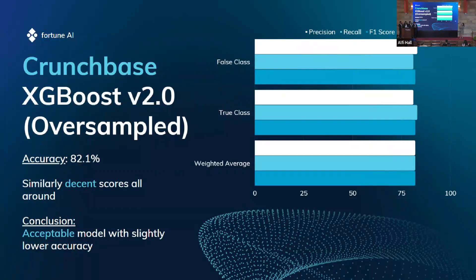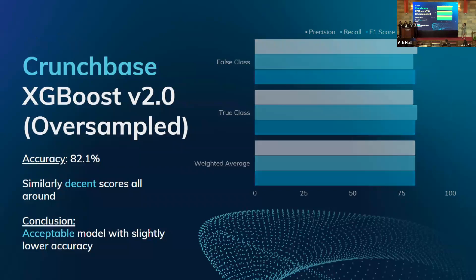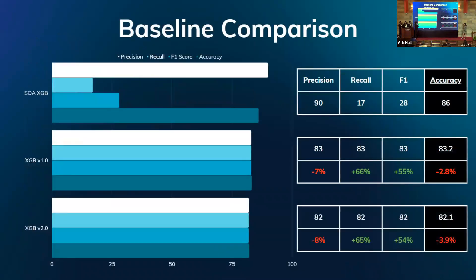Version 2 was slightly less accurate but also consistent across all classes, and gave investors more insight into founder-related features. As a comparison to the baseline state-of-the-art model from research, that model had higher accuracy and precision but very low Recall and F1, because it also predicted most companies as unsuccessful. Our models, version 1 and version 2, have generally 2-3% lower accuracy overall, but much higher Recall and F1 scores, so we believe our models are overall much more accurate.